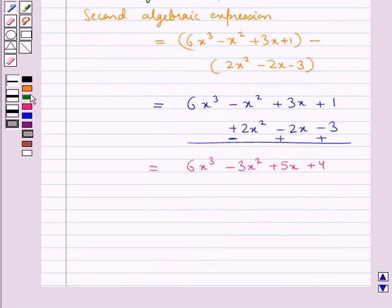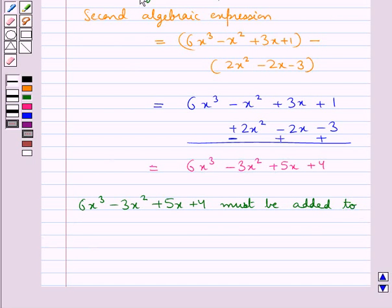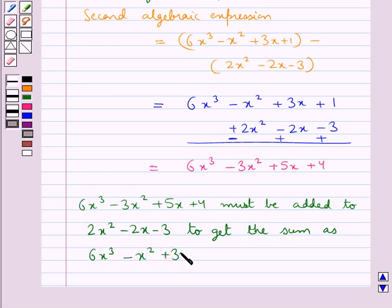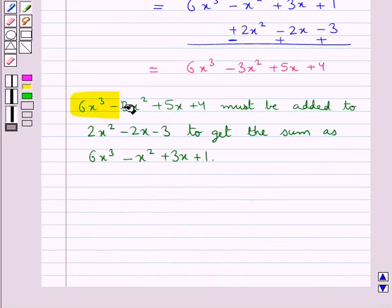So thus we can now say that 6x³ - 3x² + 5x + 4 must be added to 2x² - 2x - 3 to get the sum as 6x³ - x² + 3x + 1. So this is our final answer.